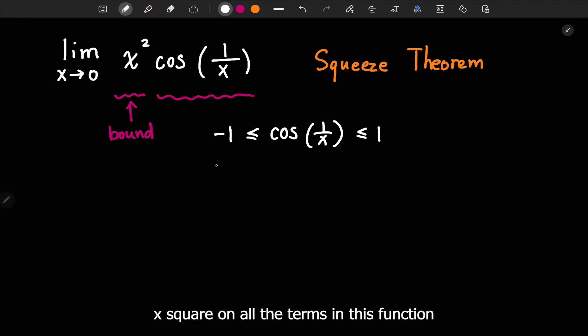So let's times x squared on all the terms in this function. On the left side, we would have negative x squared. In the middle, we have x squared times cosine 1 over x. On the right side, we have x squared.